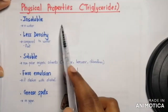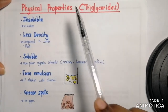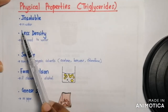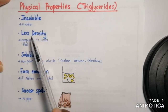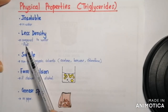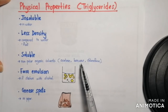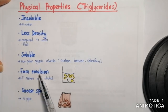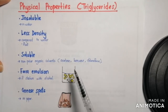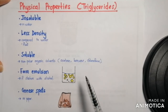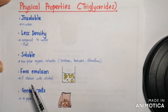The physical properties of triglycerides are the same as lipids: insoluble in water, less density (meaning it floats on water), soluble in non-polar organic solvents such as acetone, benzene, and chloroform. It also forms an emulsion if shaken with alcohol — we will explore that deeper in the phospholipid topic — and forms grease spots on paper.